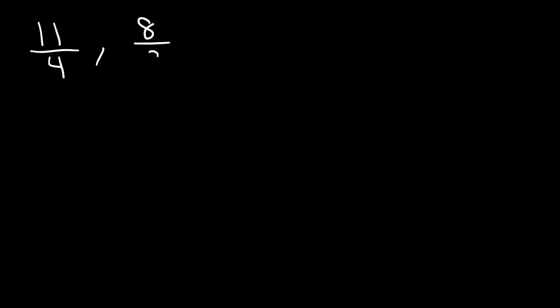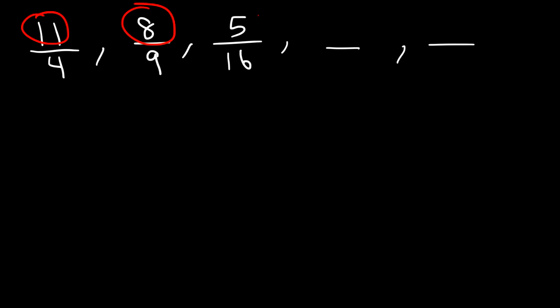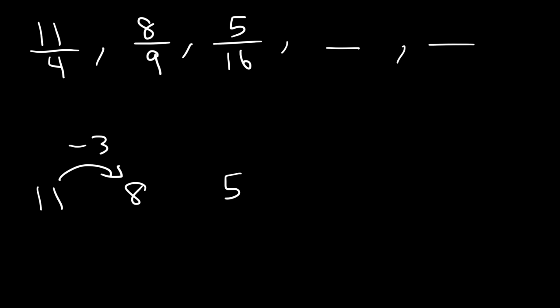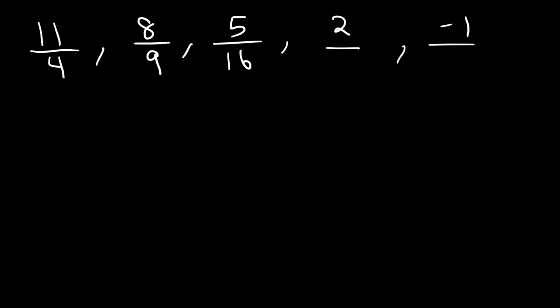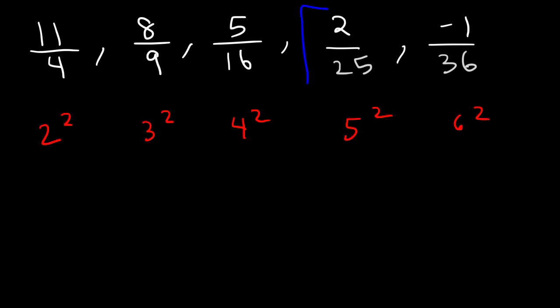Here's another example: 11/4, 8/9, 5/16. Find the next two numbers in this sequence. If we focus on the top numbers — 11, 8, 5 — the common difference is negative 3. So 5 minus 3 is 2, and 2 minus 3 is negative 1. On the bottom — 4, 9, 16 — they're all perfect squares. 4 is 2 squared, 9 is 3 squared, 16 is 4 squared. So the next denominators have to be 5 squared and 6 squared, which are 25 and 36. The missing numbers are 2/25 and negative 1/36.